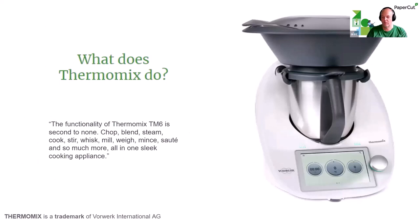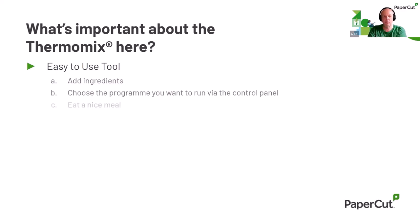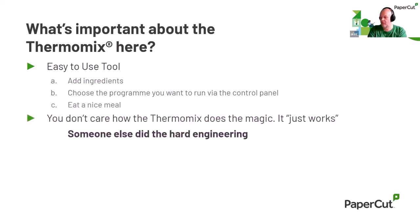I'm going to introduce the concept of the Thermomix. It's a commercial product — you buy it for your kitchen, it's got lots of functionality all built into one simple box. You put the ingredients in as per the book, push the right buttons, and at the end you get a meal. You don't need the fancy kitchen or fancy people. It's easy to use — you don't need special cooking skills, you don't need to go to catering college. You don't actually care what happens inside that box. It just works, and somebody else did a lot of very hard engineering to make it work.